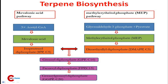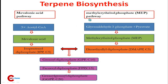Terpenes are biosynthesized from acetyl coenzyme A or glycolytic intermediates via two pathways: the mevalonic acid pathway and the methyl erythritol phosphate pathway. In the mevalonic acid pathway, three acetyl coenzyme A molecules join to form mevalonic acid, a six-carbon intermediate, which is then pyrophosphorylated, decarboxylated, and dehydrated to yield isopentenyl diphosphate (IPP), the five-carbon building block of terpenes.